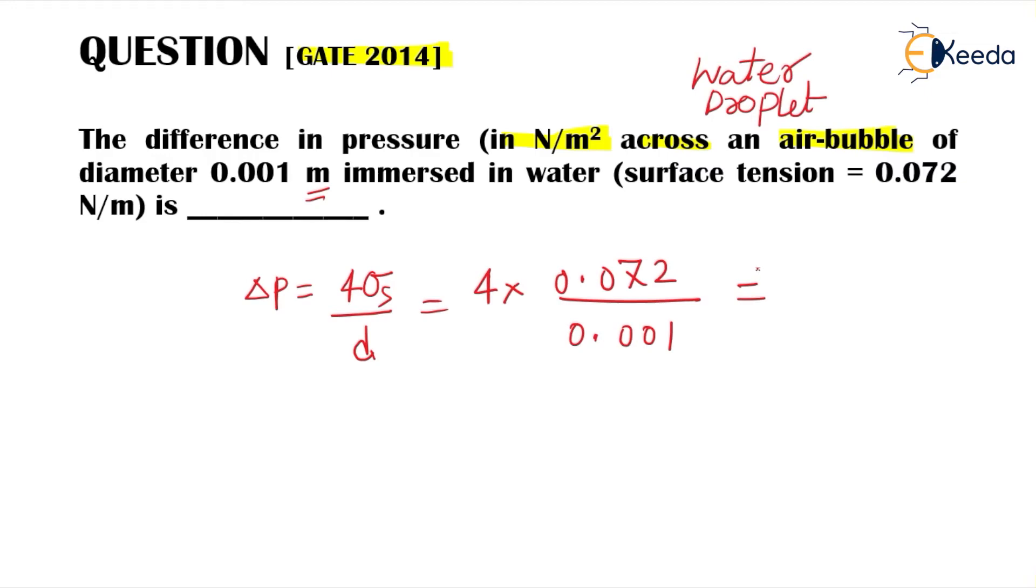And the answer after making calculation will be somewhere around 288 Newton per meter square. So Delta P value can be given as 288 Newton per meter square. Because this is a numerical answer type question, we need to input the value. Take special care of units. The answer will be 288 units. Thank you.